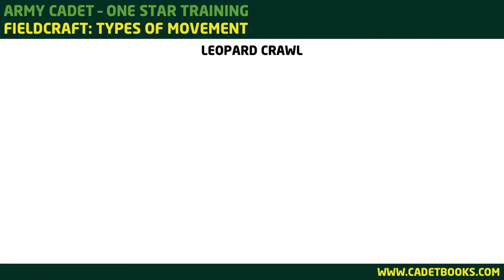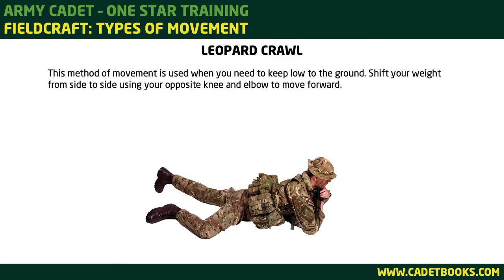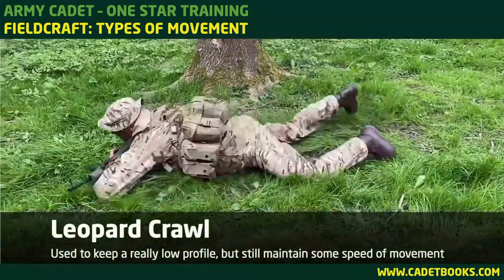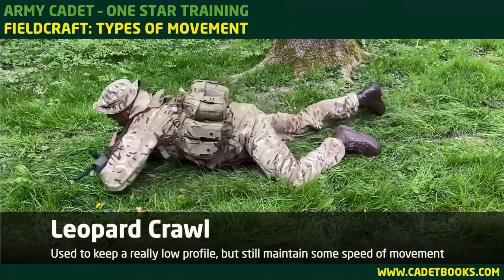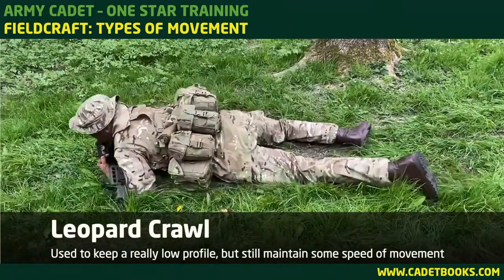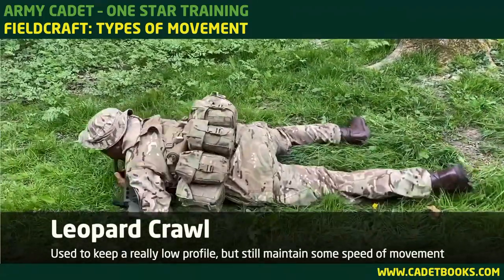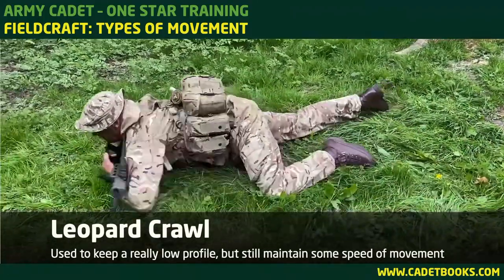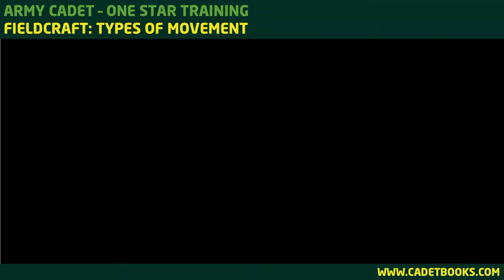Leopard Crawl: This method of movement is used when you need to keep low to the ground. Shift your weight from side to side using your opposite knee and elbow to move forward. Keep low and try not to lift your body as you move forward. With a rifle, you can carry it by holding the pistol grip and handguard, or by holding it across both arms.